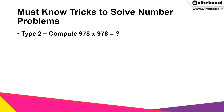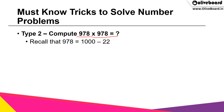Let us look at another question: compute 978 × 978. Now, as you just understood from the previous question, we cannot multiply directly — that is not the efficient way. For those who already know how to solve this, go ahead; for those who would like to review, let us go step by step. Recall that 978 is 1000 − 22, so 978 × 978 is (1000 − 22)².